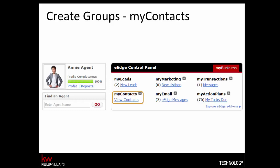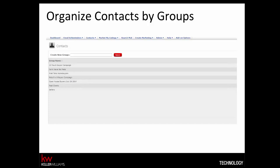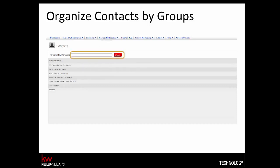We'll show you these steps later in the presentation. To get started, visit mykw.kw.com, click on My Contacts, then click View Contacts. Before launching a touch campaign in eEdge, it's a huge time saver to organize your contact database into groups. You'll start this process from the Contacts drop-down menu, choose Manage Groups, then click Create New Group. Create the new group, then save.